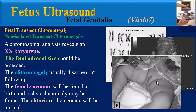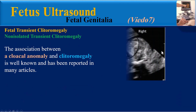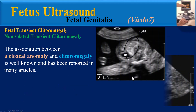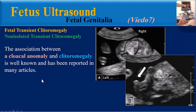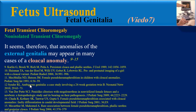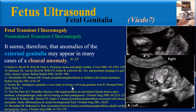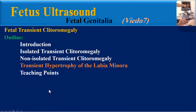The fetal adrenal size should be assessed, and the clitoromegaly usually disappears at follow-up. A female neonate will be found at birth, and a cloacal anomaly may be found; the clitoris of the neonate will be normal. The association between a cloacal anomaly and clitoromegaly is well known and has been reported in many articles. It seems that anomalies of the external genitalia may appear in many cases of a cloacal anomaly.